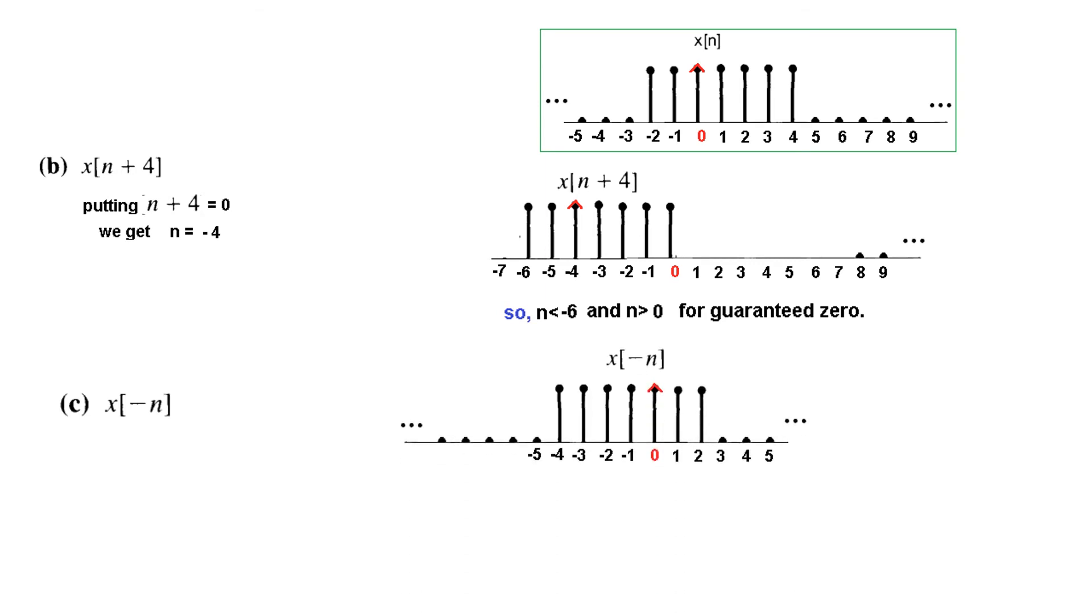You can see whatever was on the right hand side, it has come on the left hand side. And the left hand side signals have come on the right hand side. So this is now x[minus n]. And now here you can see that the signal is guaranteed 0 for less than minus 4 or greater than 2. So less than minus 4, greater than 2.